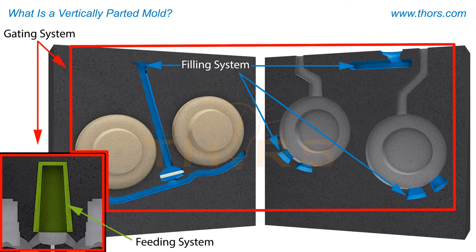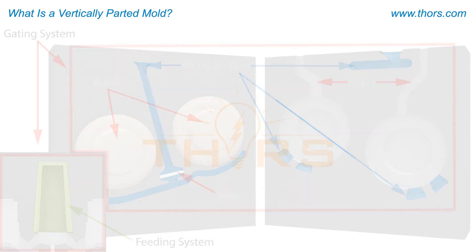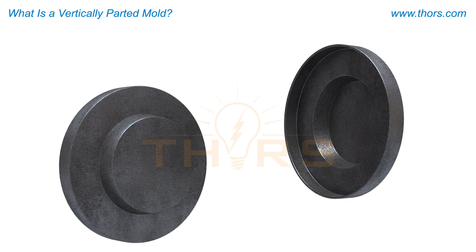Additional features may include the core, vents, and filter. All of these parts contribute to how molten metal travels through a mold to produce a sound, quality casting.